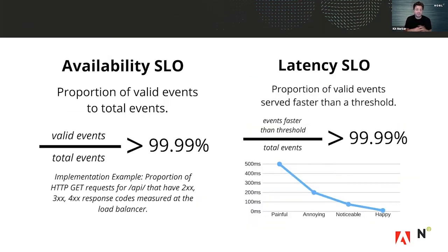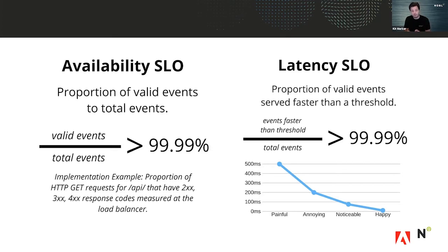When we think about the actual definition of an SLO, there are different types, but generally speaking they're calculated as a proportion — a proportion between good events and total events, or events above a certain threshold and all events. You can see examples of an availability SLO and how you would describe that for implementation at a specific load balancer, with specific response codes for a specific API. In the case of latency, ideally you would set your thresholds based on user experience — not just some random number of milliseconds, but tied to what is noticeable or annoying for customers. The point of the SLO is to figure out what is going to make customers happy.